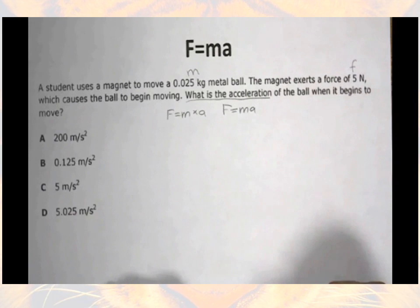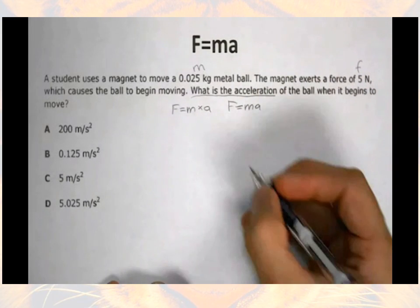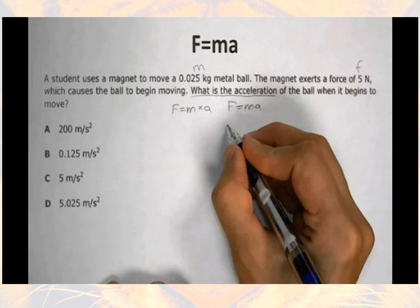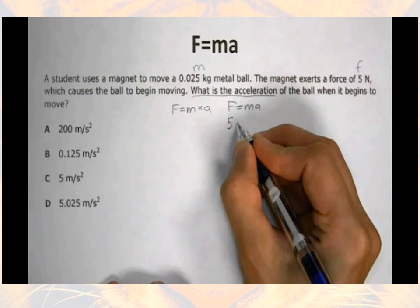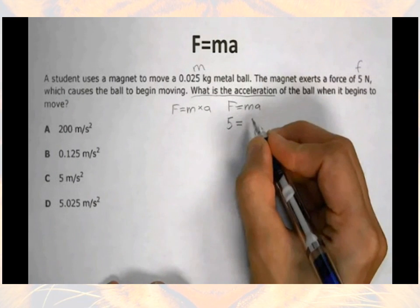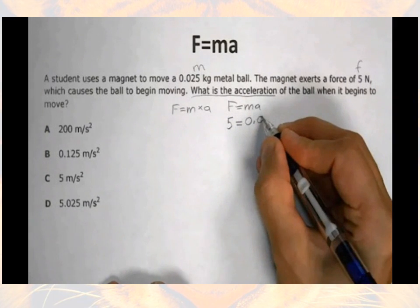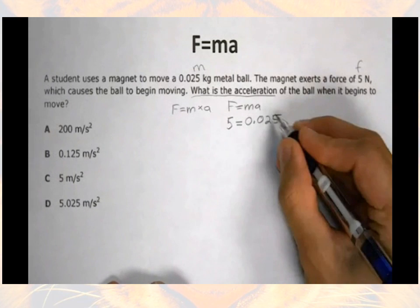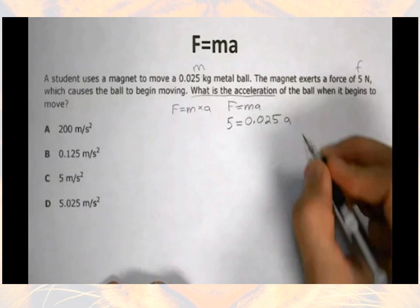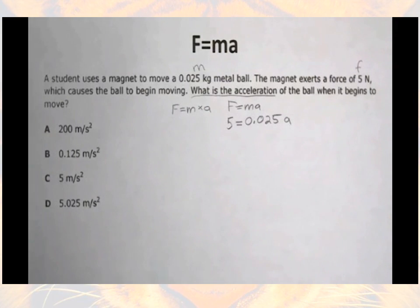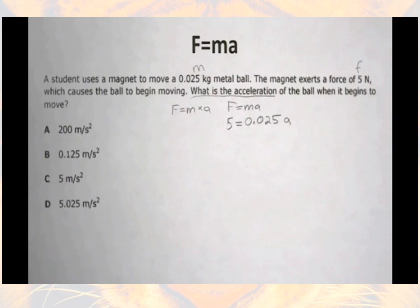Next, substitute in the numbers I do have. For force it was 5 newtons, so I put 5 there. The mass was 0.025. And I still need to find the acceleration. If you can get this far, you pretty much have a good understanding of the science. So really, if you get stuck anywhere after here, it's probably the math that you need to work on.